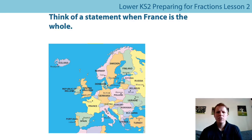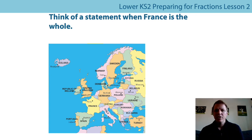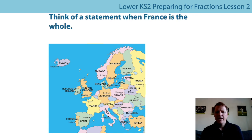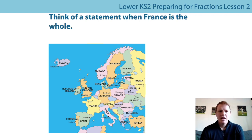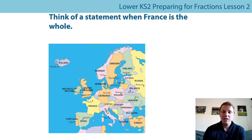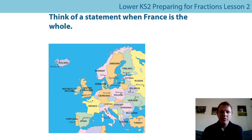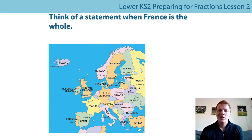Two more examples. If Europe is the whole, the United Kingdom is a part of the whole. In the second example, I've changed the definition of the whole — now the United Kingdom is the whole, and England is a part of the whole. Can you think of a statement when France is the whole? Looking back at our map of Europe, France is shown in yellow. A sentence you could say: if France is the whole, then Paris is a part of the whole. Or if France is the whole, the Eiffel Tower is a part of the whole, because the Eiffel Tower is in Paris, which is in France.